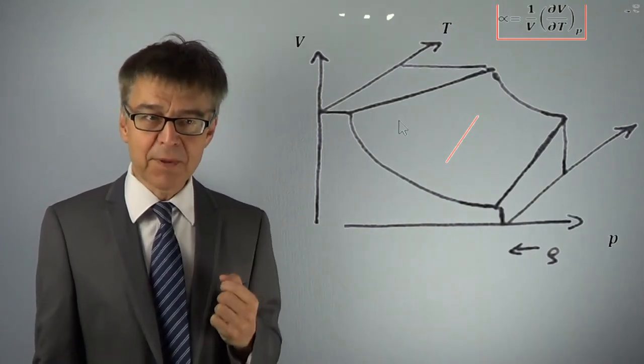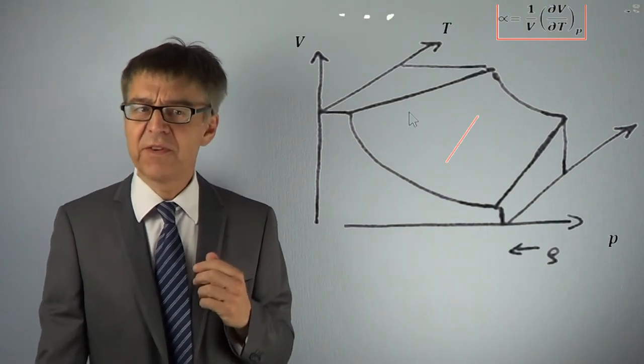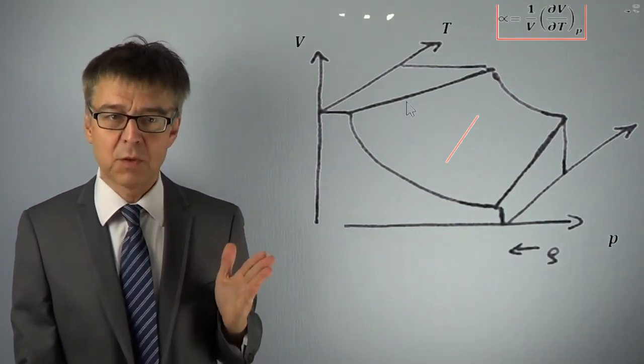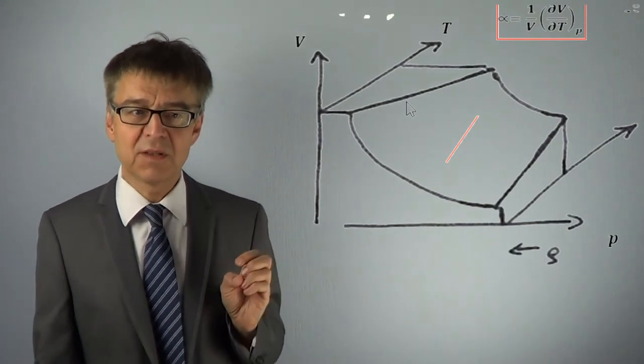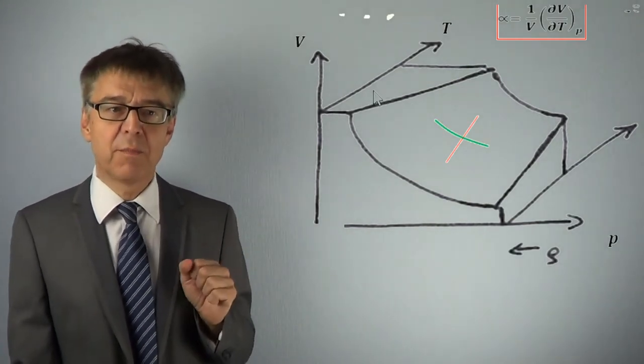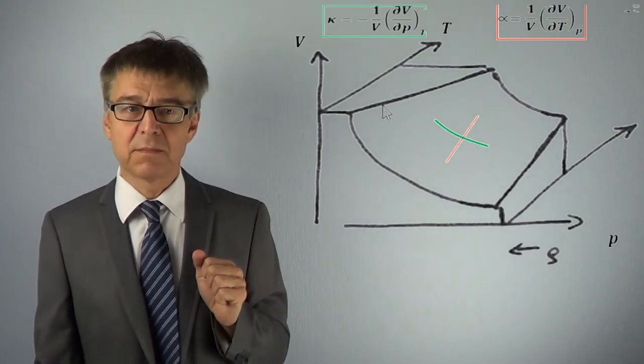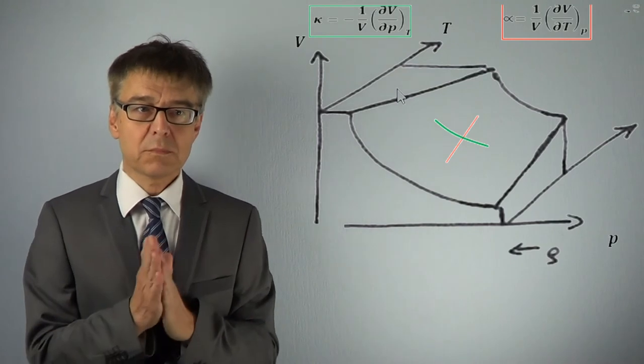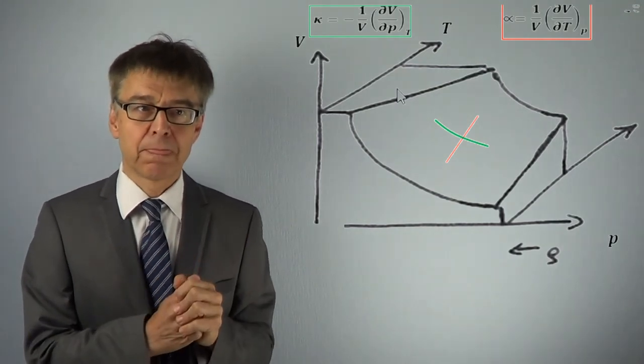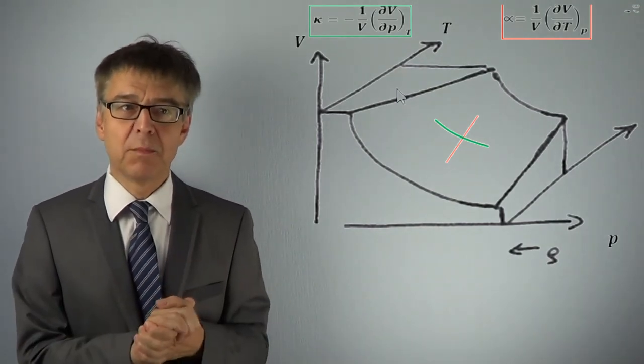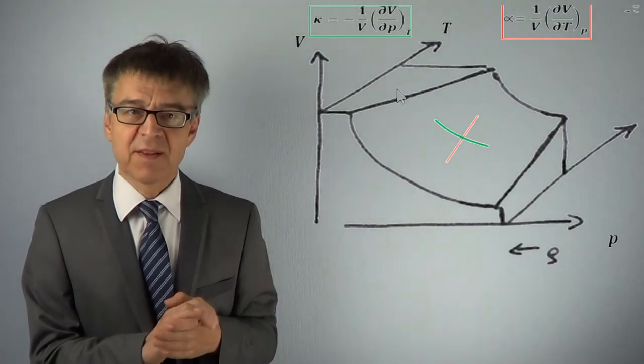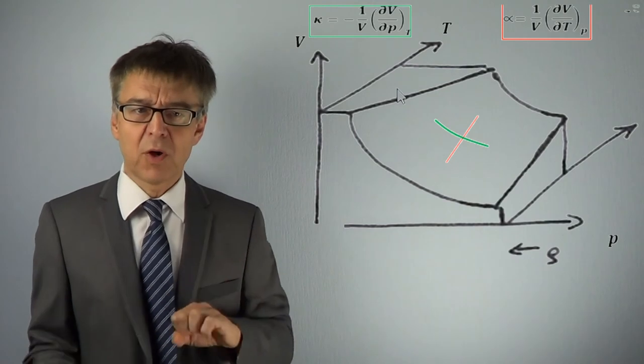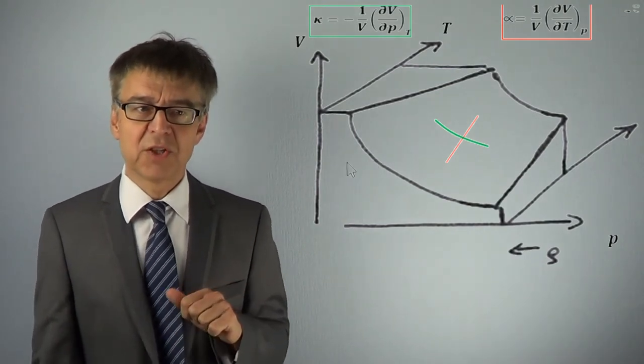If we keep temperature constant, the partial derivative of the molar volume with respect to pressure, we look in east-west direction, left to right, corresponds to the compressibility kappa. The relationship between molar volume and pressure. The steeper the slope, the more sensitive is molar volume to a change in pressure.